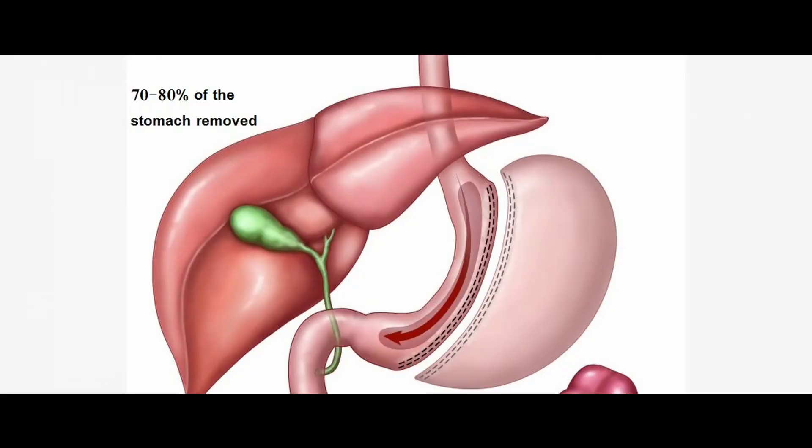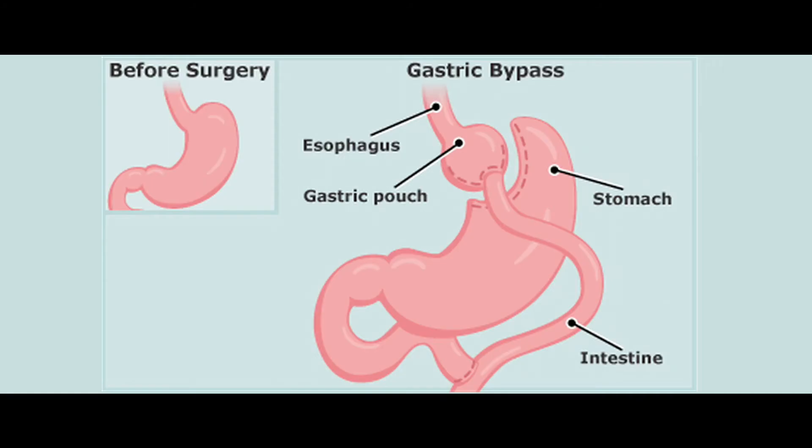The surgery itself is a fairly simple surgical technique. The main procedures are sleeve gastrectomy, performed laparoscopically, and gastric bypass. Gastric bypass is used particularly for obesity combined with diabetes and blood pressure. It is also done laparoscopically. The surgery typically takes one to two hours.